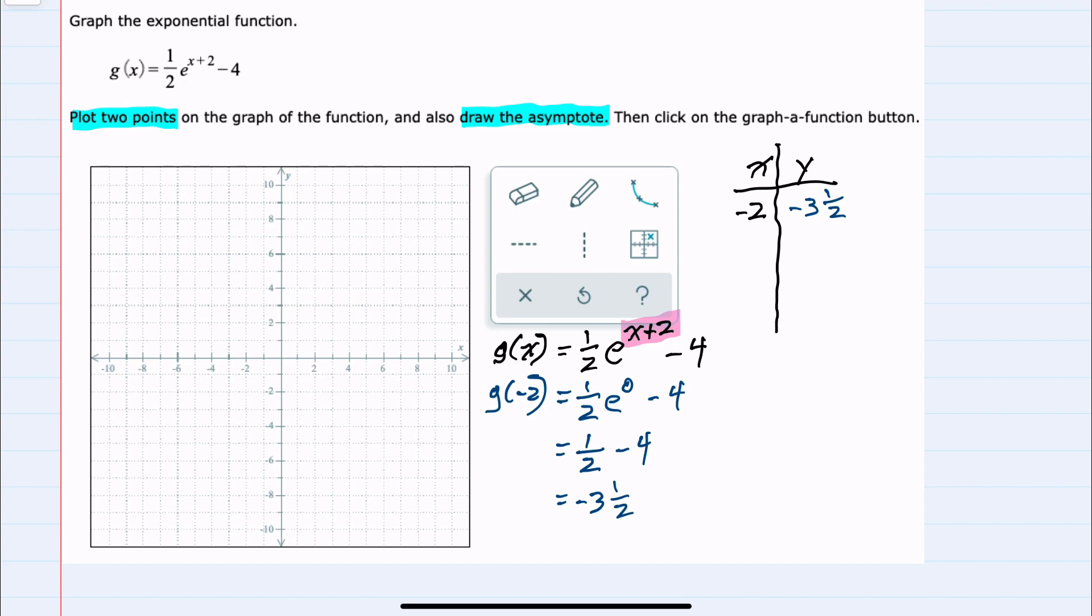To choose a second number for x, when we substituted negative two it gave us e^0. Another relatively easy value would be e^1, and that would happen when x equals negative one. So substituting in negative one for x would give us (1/2)e^(-1+2) - 4. Negative one plus two would be our one, keeping the minus four, so here we could simplify to e/2 - 4.